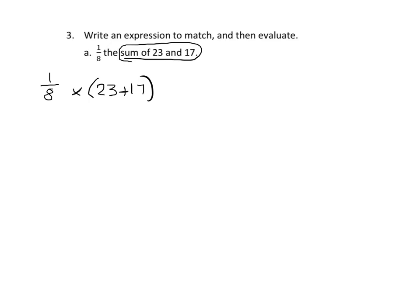In this case, we could have, if we chose to, we could have used the commutative property, and we could have written it like this. And that would work also. But I chose to write it the way I did right here first. So it's one-eighth of the sum of these two numbers. I know the word of wasn't here, but I put it in there. One-eighth of the sum of 23 and 17.